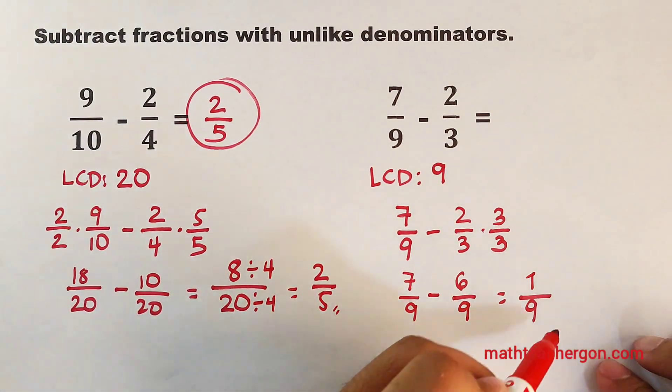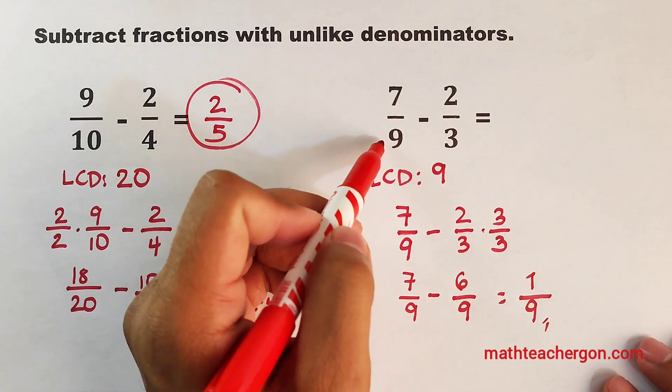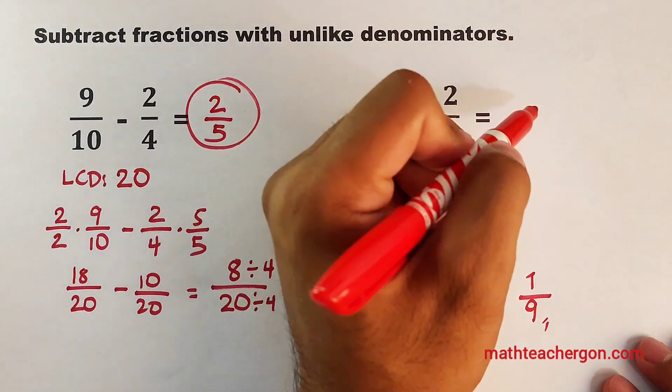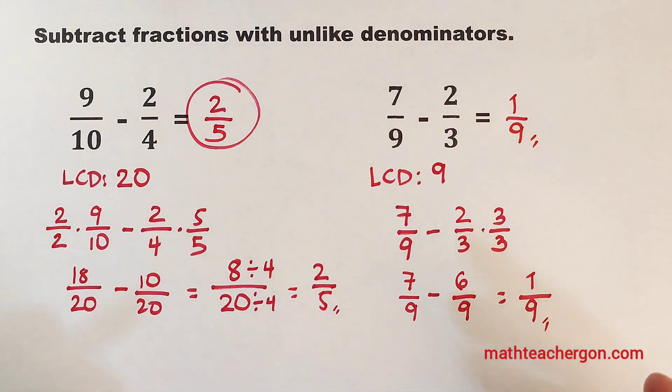This 1 is already the final answer. So, the difference between 7 over 9 and 2 over 3 is simply 1 over 9. So, that's it, guys. So, as part of our routine,